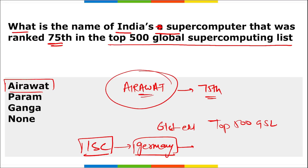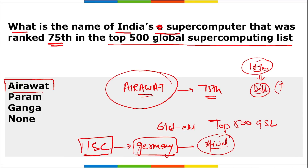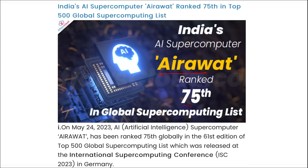An interesting side note: Germany has officially entered recession. Also, there is concern that from June 1st, if the US debt ceiling is not increased, USA could default on their debt and potentially enter recession, which would impact the whole world. As of now, remember: Germany is officially in recession, and India's supercomputer Aravat was ranked 75th in the 61st edition of the Top 500 Global Supercomputing List.